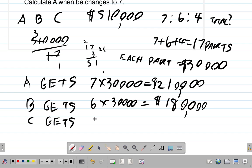C gets 4 times 30,000 dollars. So that would be 4 threes, 12, and then you have the 4 zeros, $120,000. All right, so that's what you have.